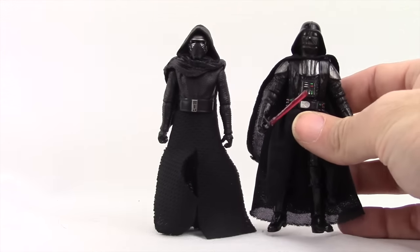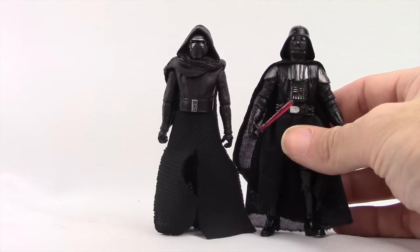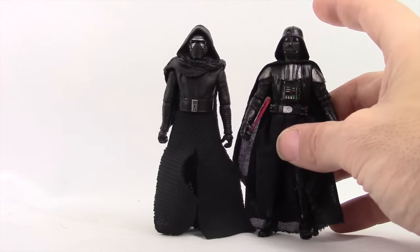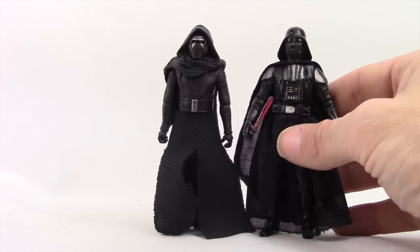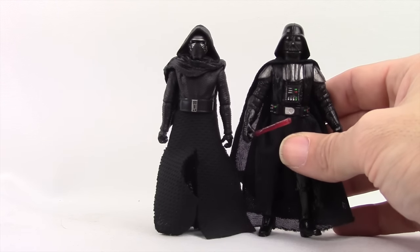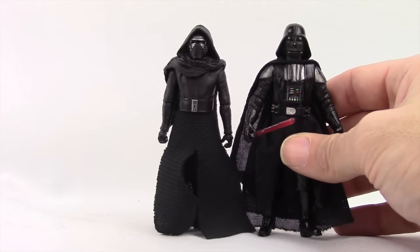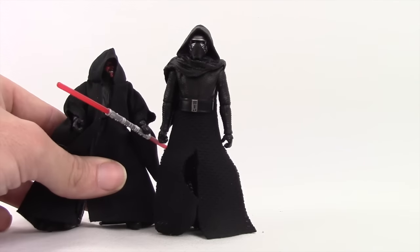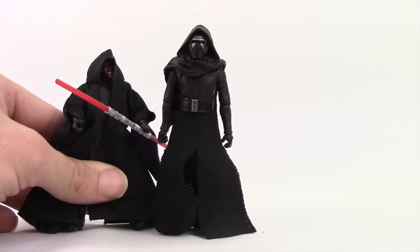For a couple more comparisons, here he is next to a Darth Vader figure from Hasbro. This isn't the most recent one, but this is one of the more articulated versions of Vader. You can see that Vader and Ren are about the same height. Ren maybe has a little more height on Vader just because his hood sticks up a little bit more. And then here he is next to Darth Maul. He is a bit taller than Maul.